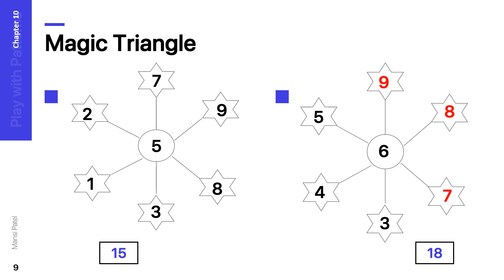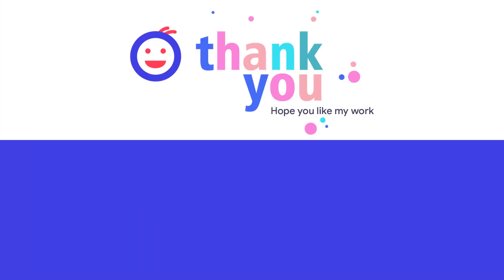So this is also one type of magic triangle — you can find the missing number with the help of the given numbers. Thank you. I hope you enjoyed this session and understood both the magic square and magic triangle. Make your own magic triangle and square!